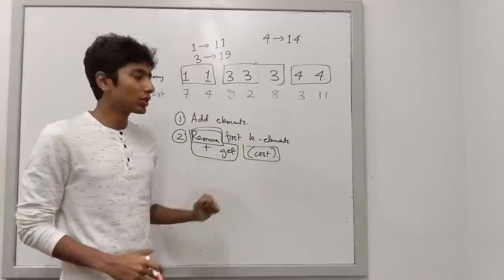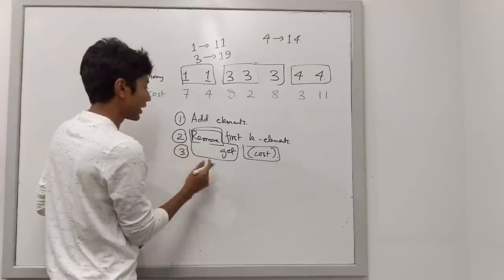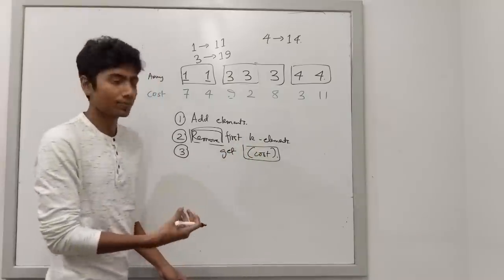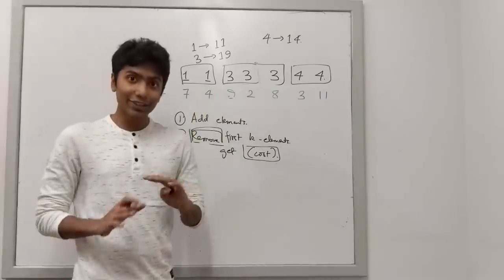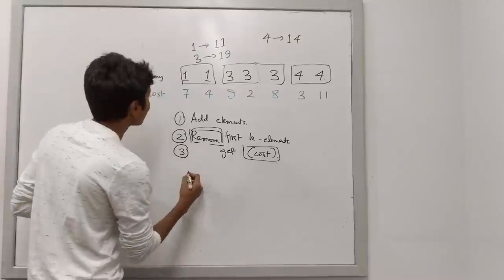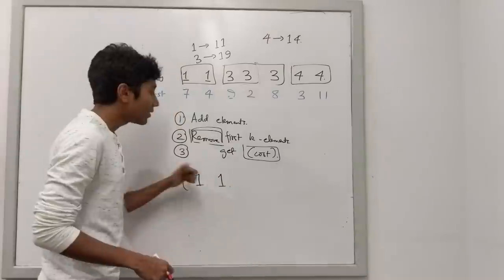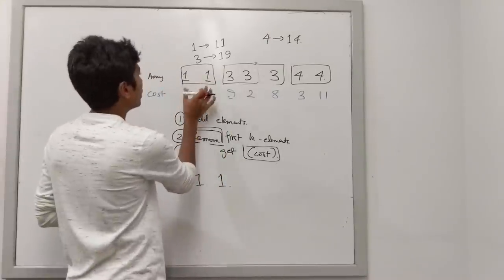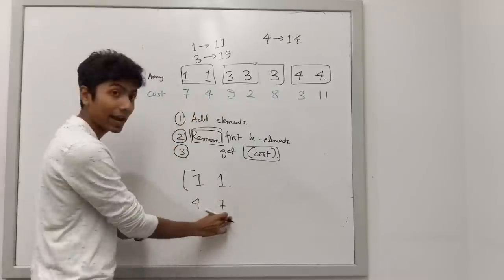If these three things work, we win. The simplest data structure we can think of is a sorted set. We initially add 1 and 1 — sorted by cost, so they're stored as cost 4 and cost 7. Then we add the three 3s with costs 9, 2, and 8. After sorting, this group inserts as: cost 2, cost 8, cost 9 — interleaved with the existing 4 and 7.